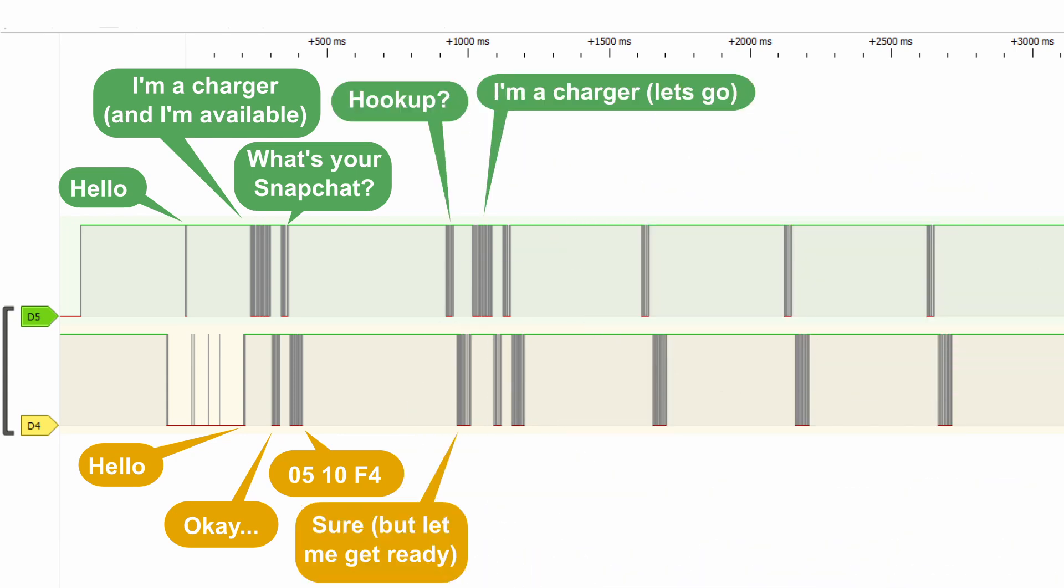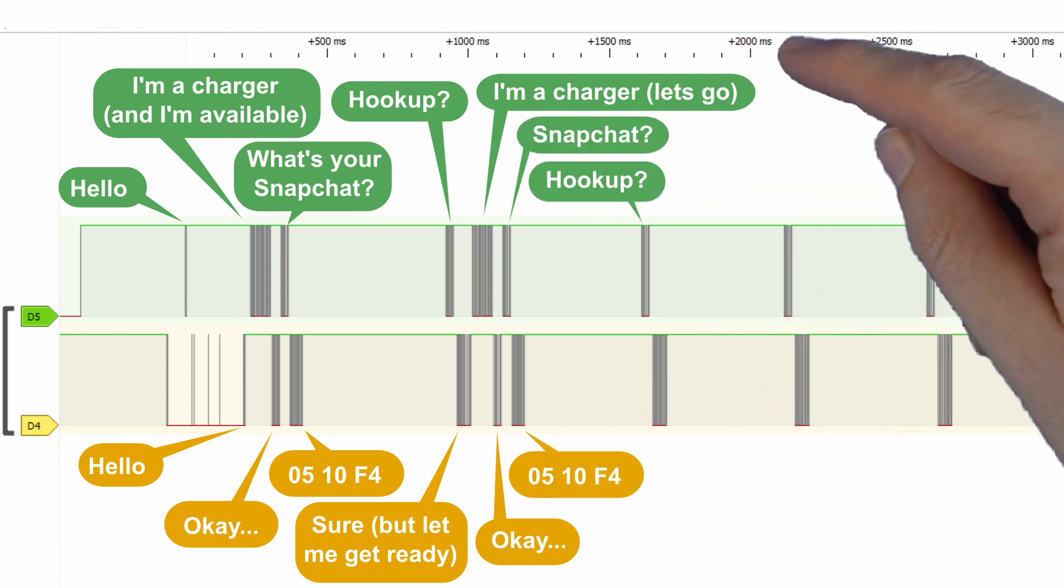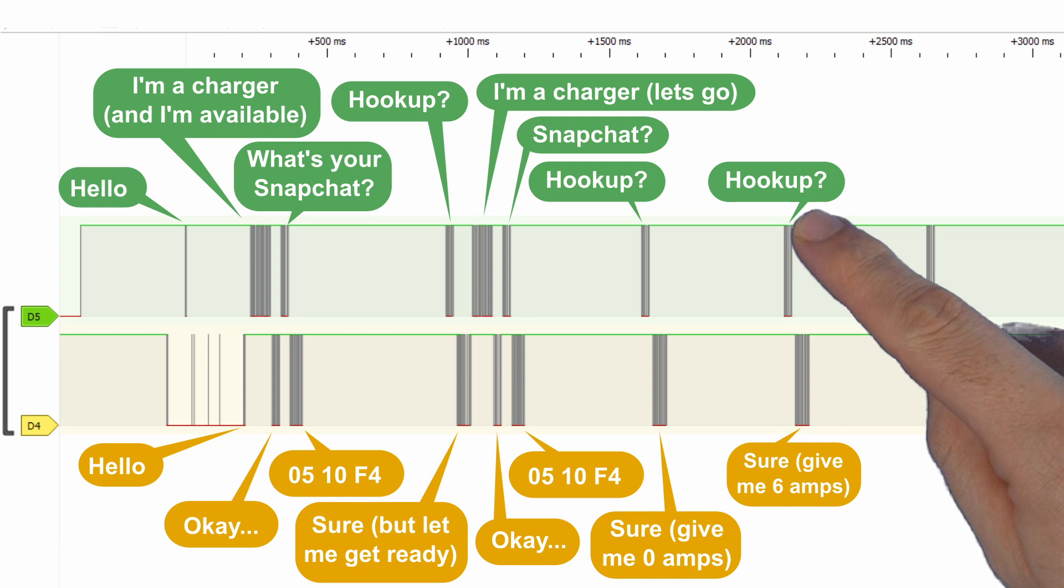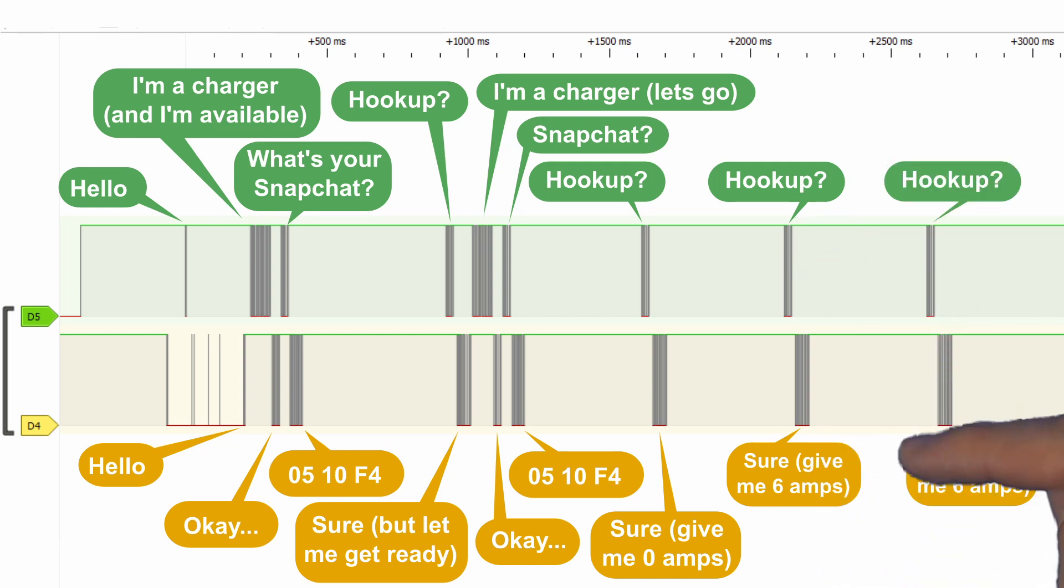The charger is a bit socially awkward and repeats the same messages again, but this time around it says 'I'm a charger, let's go' and the battery says 'sure, give me 0 amps.' After this they get down to business and we get repeating messages of 'hook up' and 'sure, give me 6 amps' every half a second.